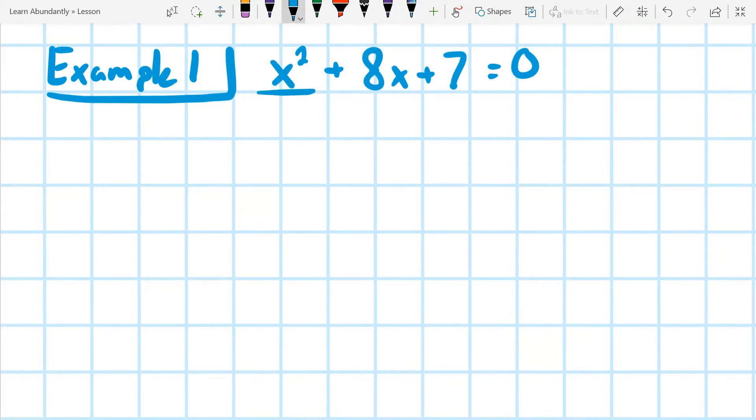So it has three terms. It has an a, a b, and a c term. And we notice that it is equal to zero. This is super important. It always should equal zero.